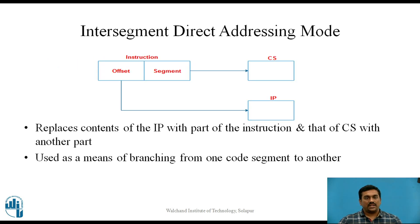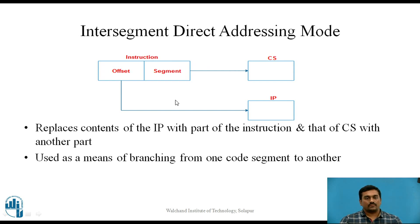The next addressing mode is intersegment direct addressing mode. In this addressing mode the physical branching address is in another segment, which is why the name intersegment. There will be new contents for both the code segment register and the instruction pointer register, and these will be specified in the instruction. The contents of the instruction pointer register are replaced with the offset value given in the instruction, whereas the contents of the code segment register are replaced by the segment value provided. This mode can be used as a means of branching from one code segment to another.